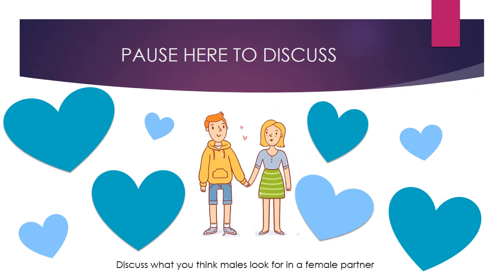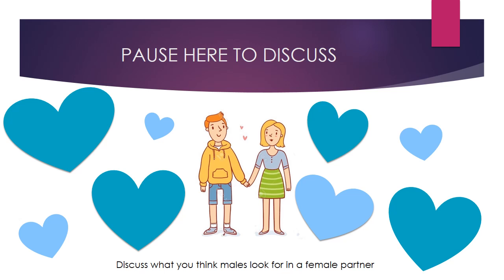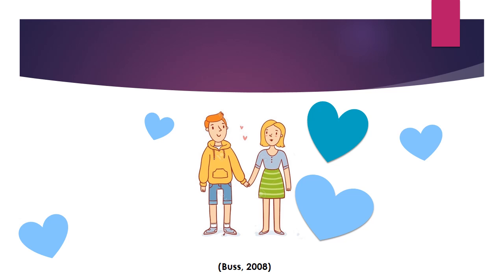Now, as done before, please pause here to discuss what you think males look for in a female partner. Some characteristics that males look for are youthfulness, attractiveness, and chastity. All of this is supported by the studies shown, and you're welcome to go over these in your own time.